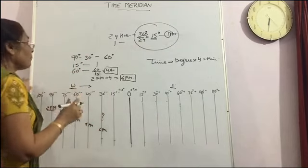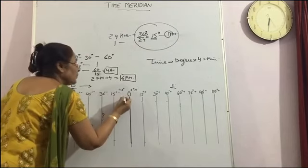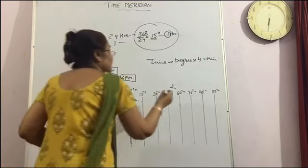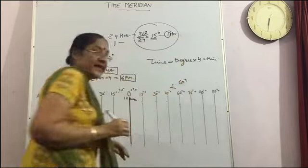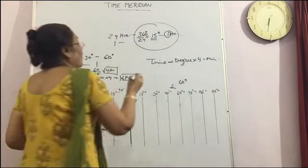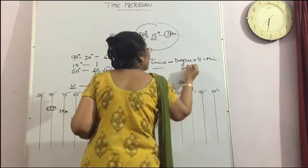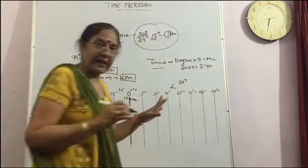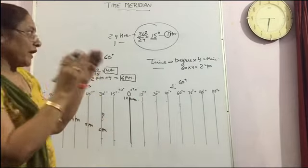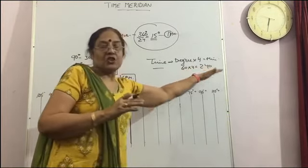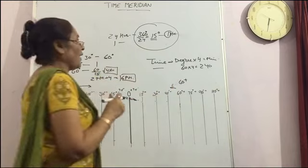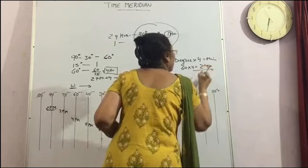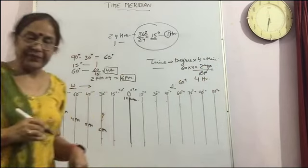Now we will take one example. Suppose the time in the Greenwich mean time is 12 noon. So what will be the time on the 60 degree east? Now we will do 60 degree into 4 minutes. Then the minutes come 240. 240 is the minutes. And then if we are going to convert these 240 minutes into hours, then it is divided by 60. Then 4 hours. This is the answer.